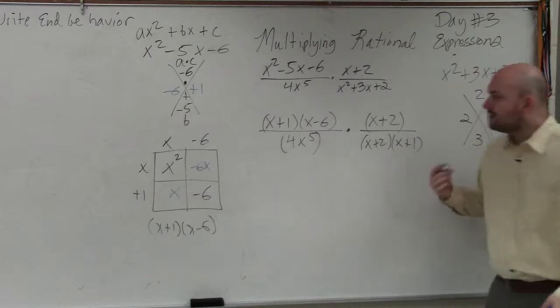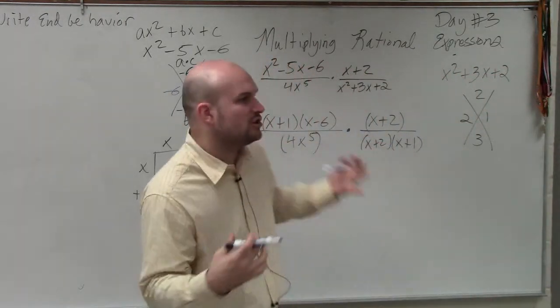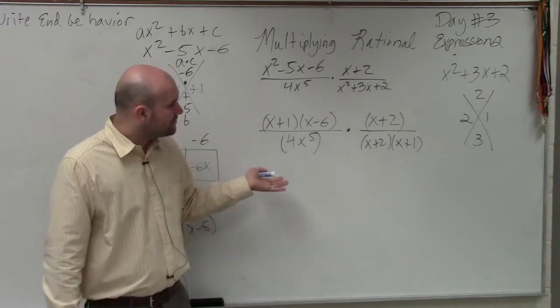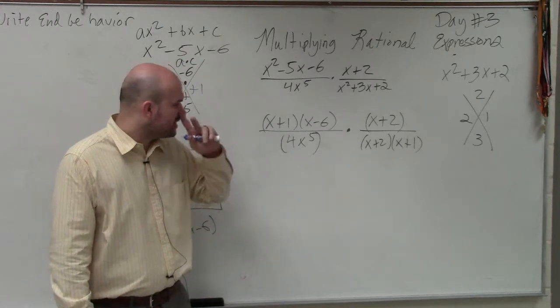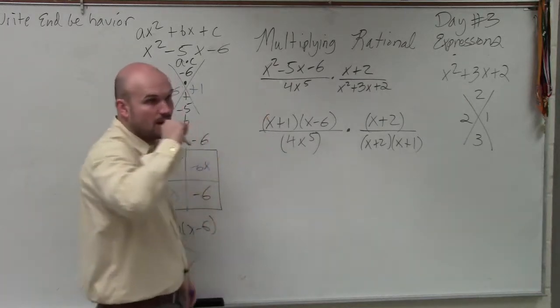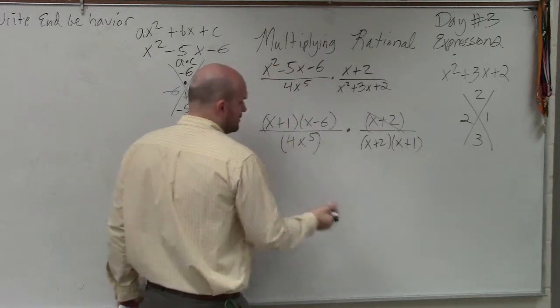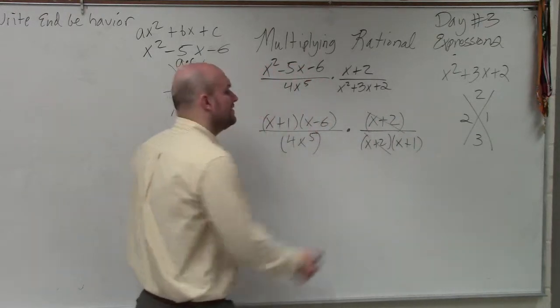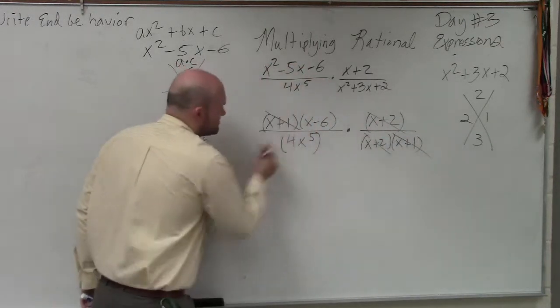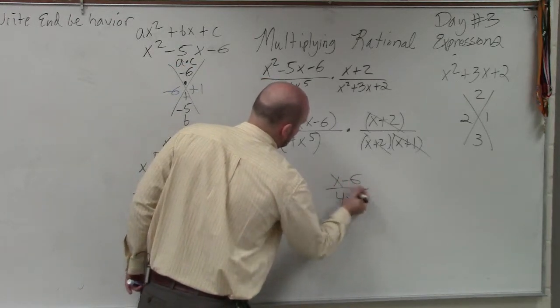Okay? And now, what I want you guys to see is, now I have every single expression is multiplied by another expression. So do I have any terms that are exactly the same in the numerator and the denominator? Yes? x + 2. x + 2 and? x + 1. x + 2. And then x + 1 and x + 1. So my final answer is x - 6 divided by 4x to the 5th.